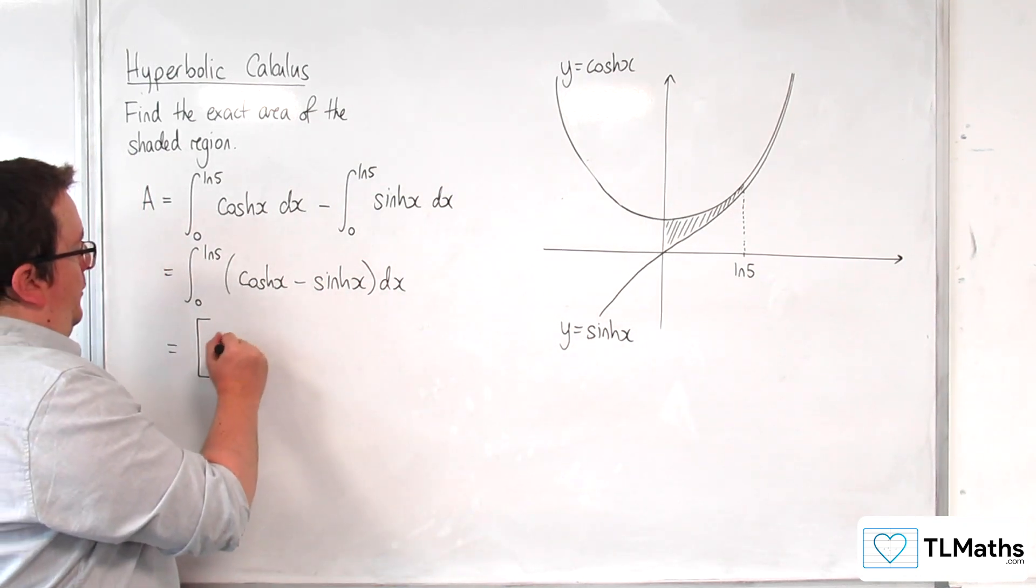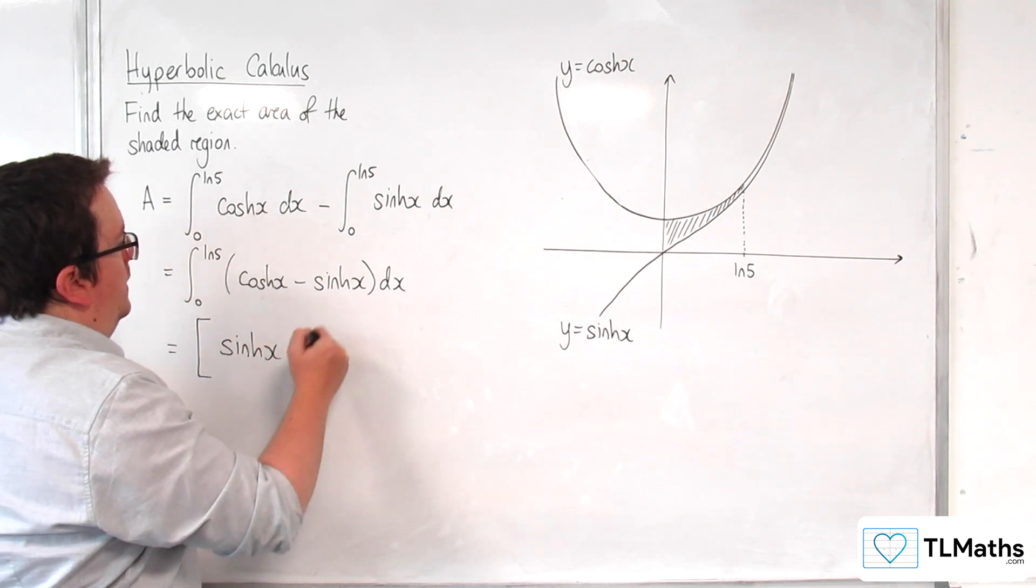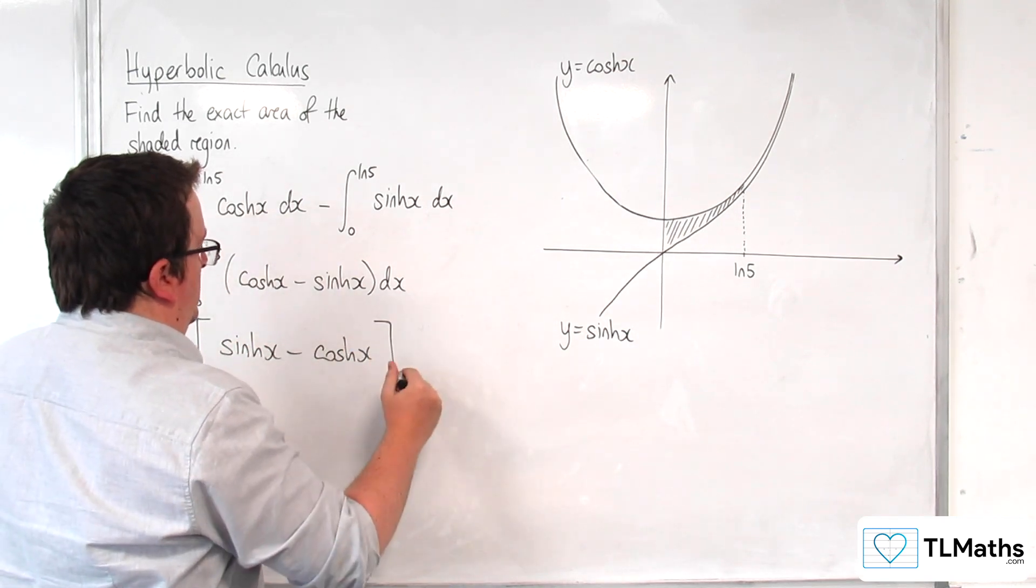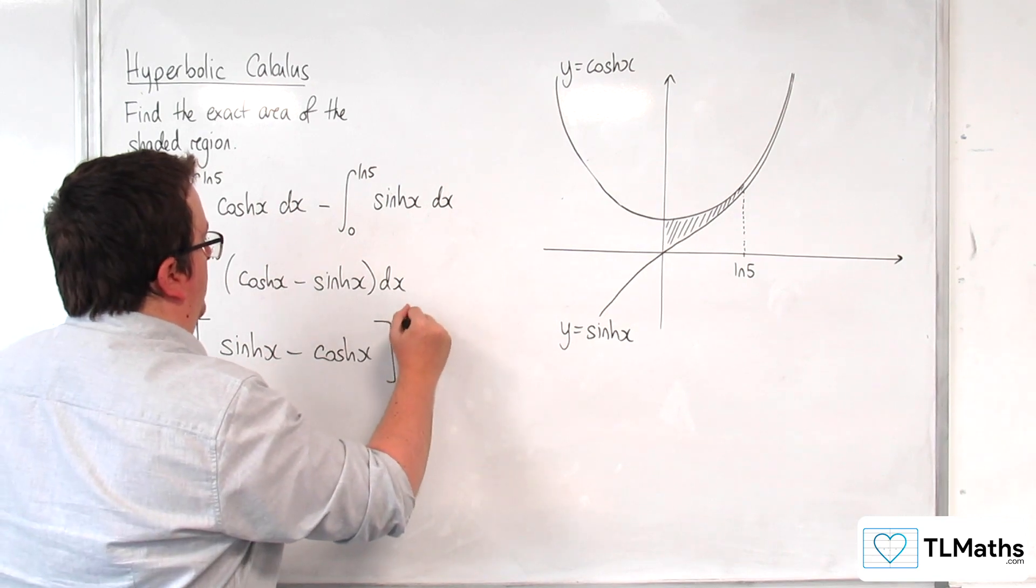So cosh integrates to sinh. Sinh integrates to cosh between 0 and log 5.